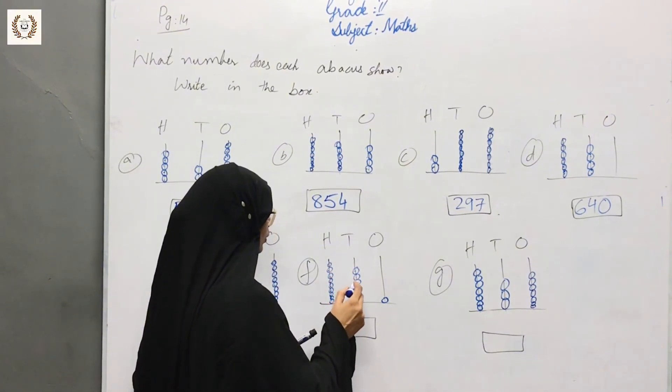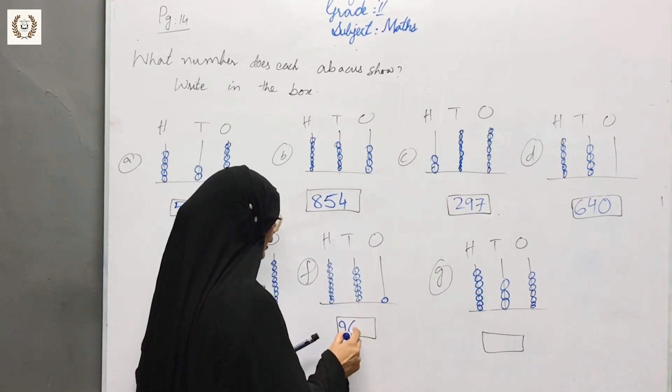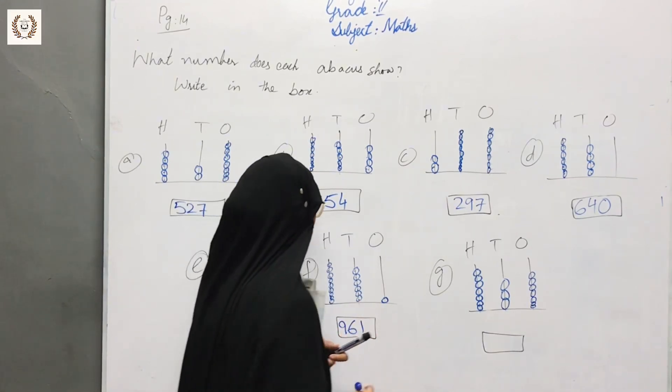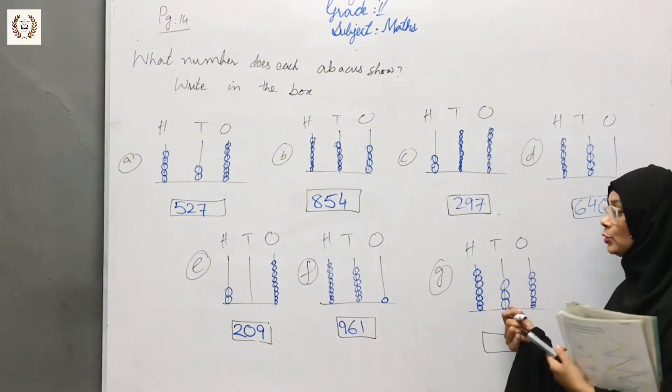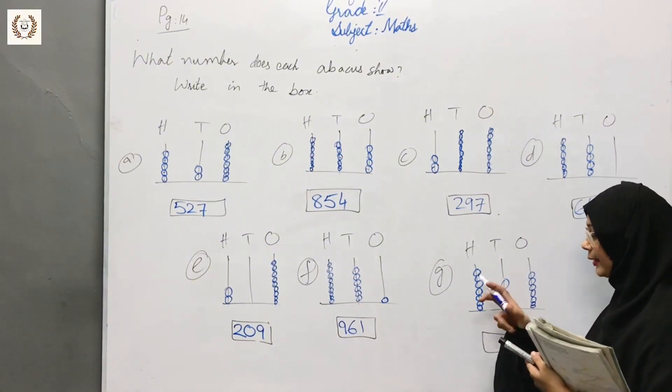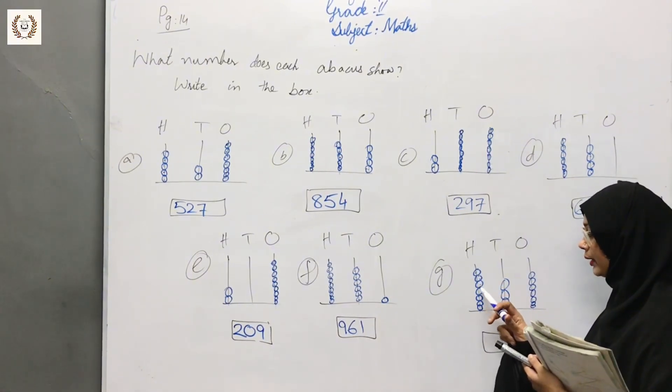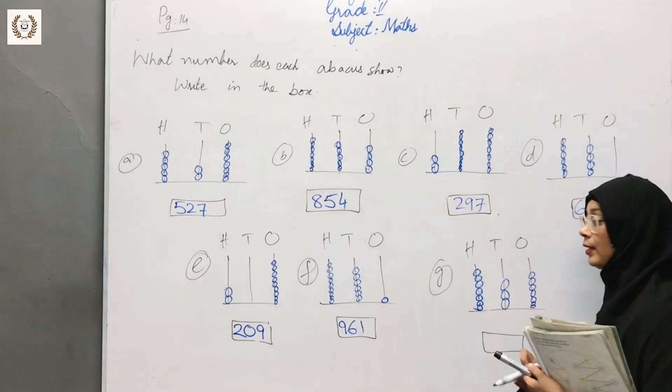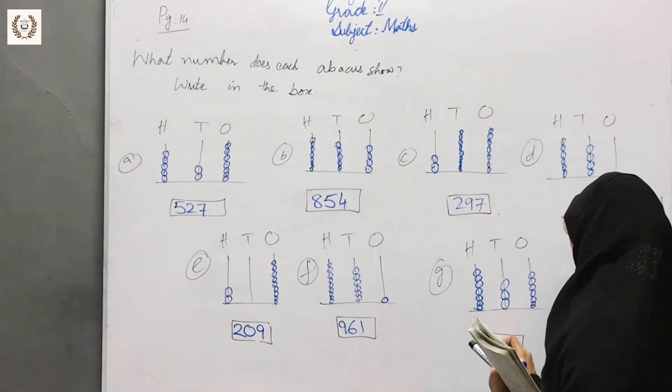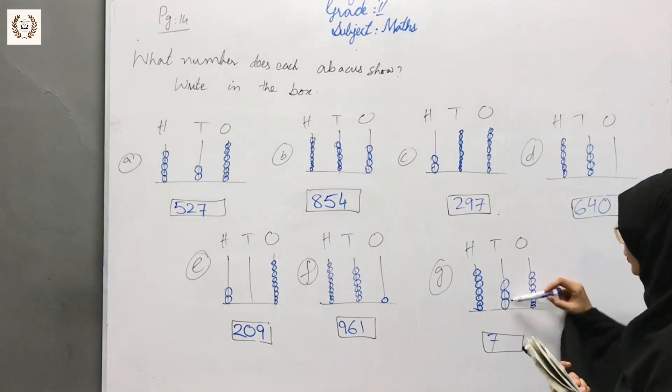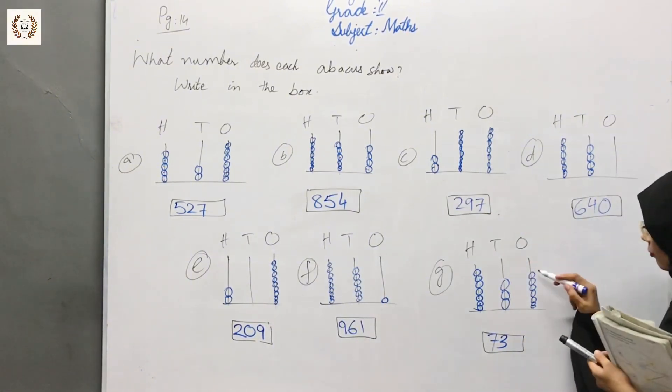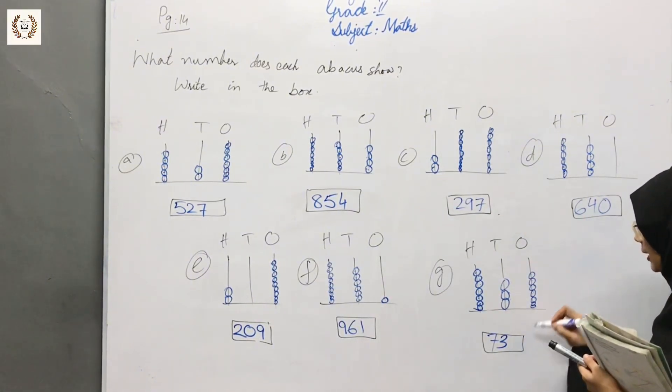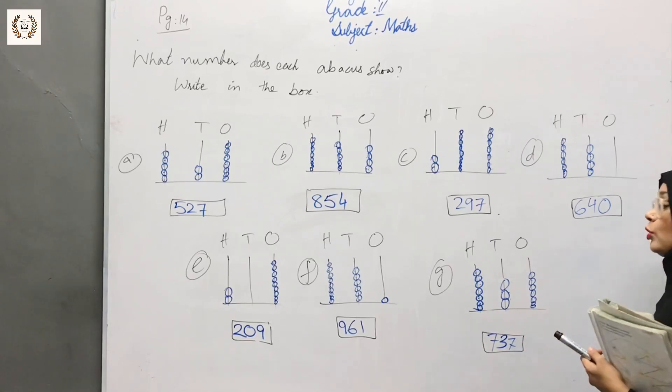Next: 900 for hundreds, tens are 1, 2, 3, 4, 5, 6, and one: 961. Now we have 700 for hundreds, 1, 2, 3 for tens, and 1, 2, 3, 4, 5, 6, 7 for ones: 737.